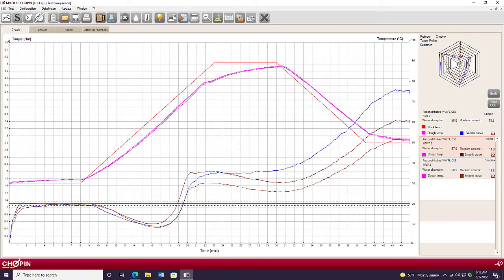The other function that you can use is the additive function. And so looking at things like vital wheat gluten, L-cysteine, enzymes, things like that. If the flour is not fitting your ideal profile, this function will help you identify an additive strategy that might help to correct some of the deficiencies of that flour.